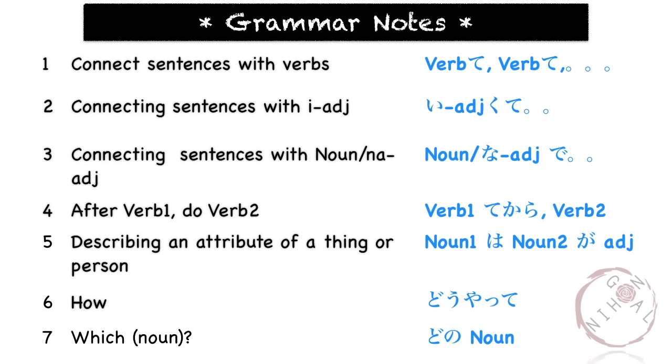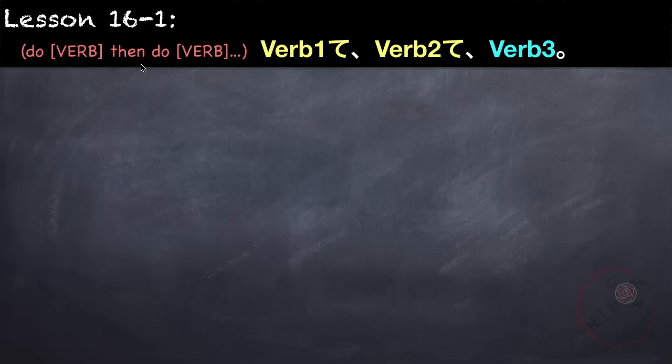Here are the grammar points that we would learn in this lesson. The first one is how to connect sentences with multiple verbs or more than one verb. For example, do verb, then do another verb. We do that by using the te form of the verb. Verb one te, verb two te. And then the last part of the sentence will determine the tense of the verb, if it's in past, present, or future tense.